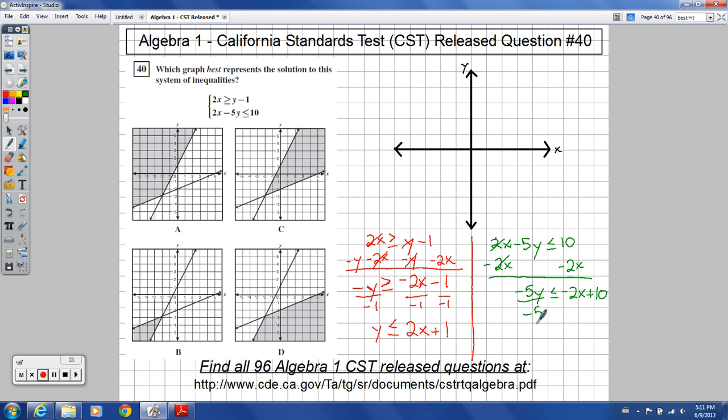Divide everything by negative 5. Get rid of that number in front of the y. You divide it by a negative, so you've got to flip the sign around. This would be 2 fifths x plus, this would actually become minus. You've got positive divided by negative, so you've got minus 2.